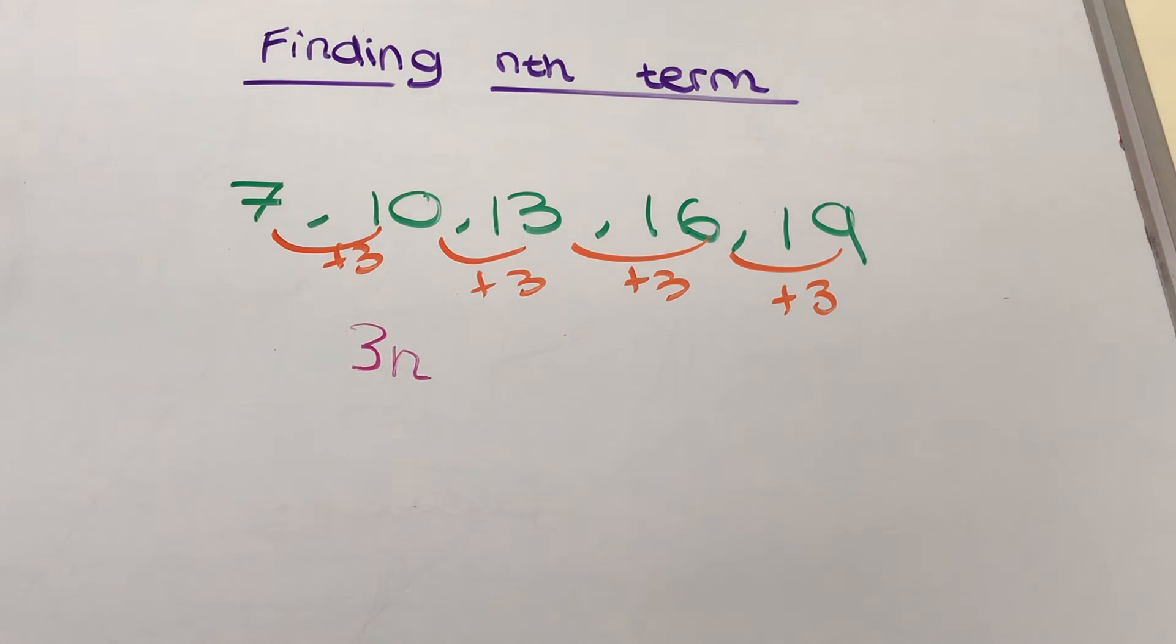However, when we're going up in 3's, we tend to be using the 3 times table: so 3, 6, 9, 12, 15, 18, 21, and so on.